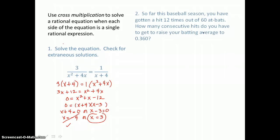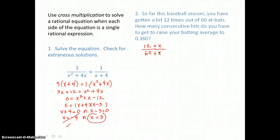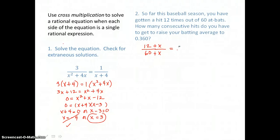In problem 2, so far this baseball season you have gotten a hit 12 times out of 60 at bats. How many consecutive hits do you have to get to raise your batting average to 0.360? Right now your batting average is 12 out of 60, and we want to know how many consecutive hits — let's call them x — you have to make to raise that batting average to 0.360.